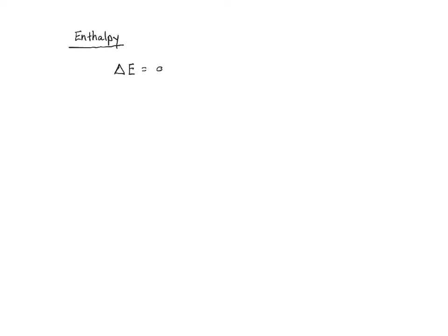In our last video, we left off looking at this equation for energy for the system, which was based upon two different components: the amount of heat that was being given off or taken in, as well as the amount of work being done by or on the system. We said it would be nice if we could somehow take this equation and translate it into terms that we can actually measure. So in order to wrap our brains around this, we need to consider two circumstances.